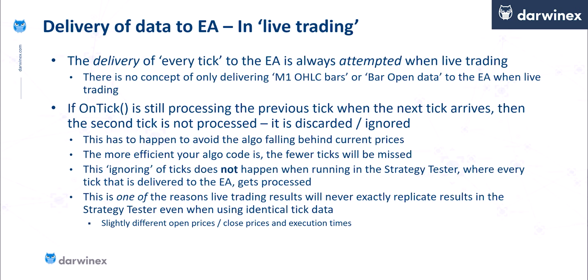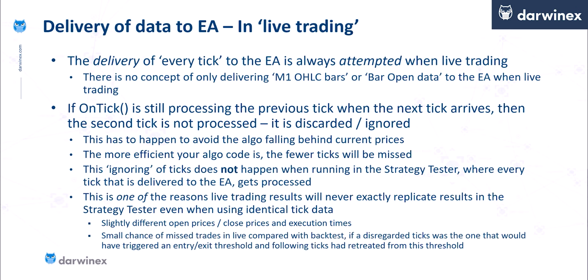So this has two implications. The first is that there will be slightly different open prices and close prices and different execution times. Secondly, there's also a small chance of missing trades in live compared with backtest. This occurs when a tick is received in live that would have triggered an entry or exit condition, but this tick was disregarded because the previous one was still processing. Then if the following ticks retreated from the execution threshold, the trade wouldn't be opened — but because that missed tick was processed in backtesting, the trade would have opened there.